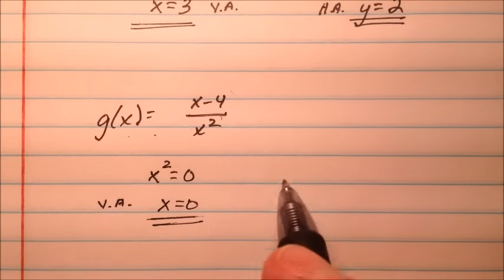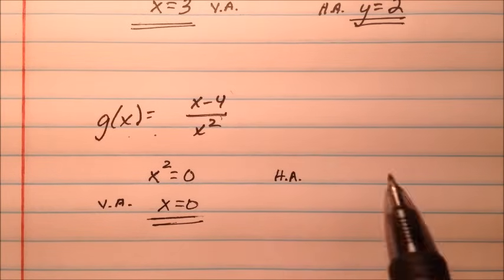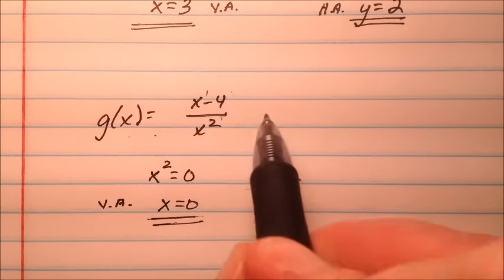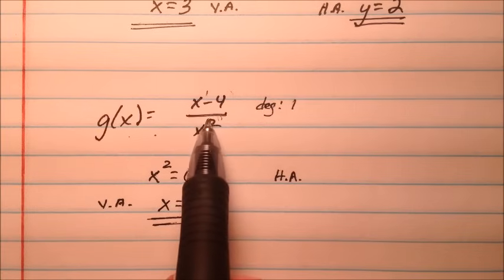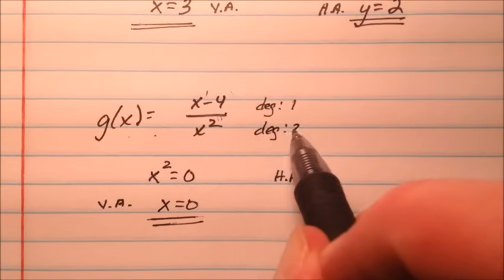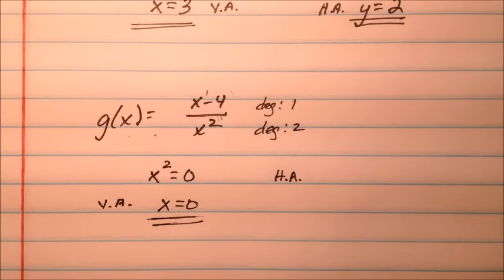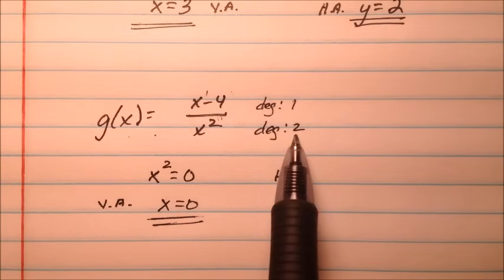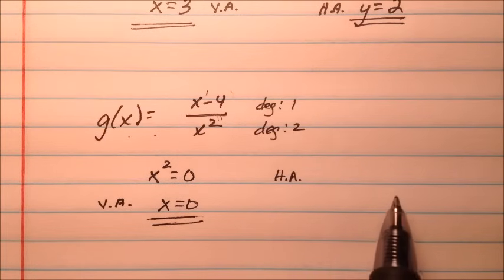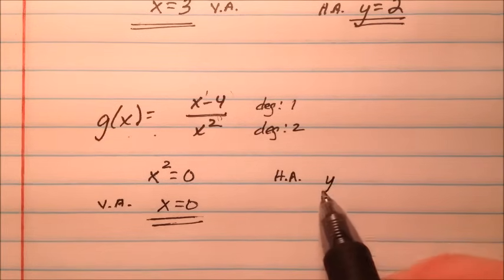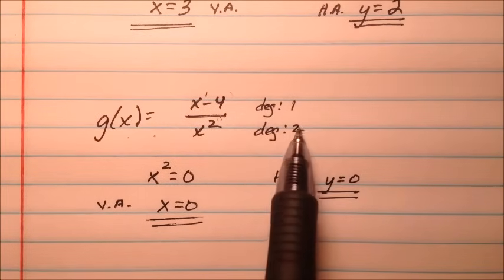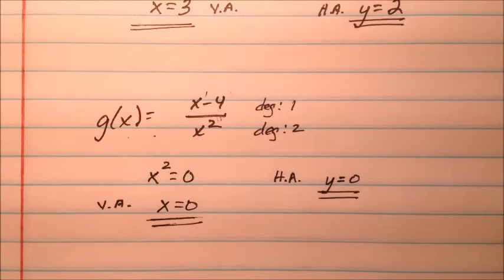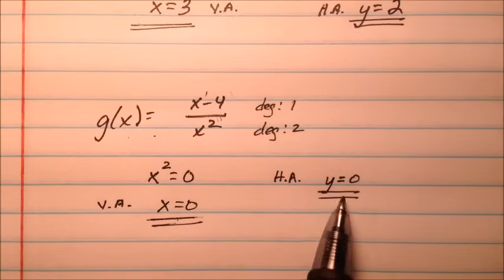For the horizontal asymptote, we look at the degrees again. The degree of the numerator is 1, and the degree of the denominator is 2. When the denominator's degree is greater than the numerator's degree, the horizontal asymptote is y equals 0. So this function has two asymptotes: one vertical at x equals 0 and one horizontal at y equals 0.